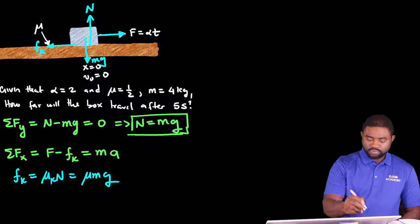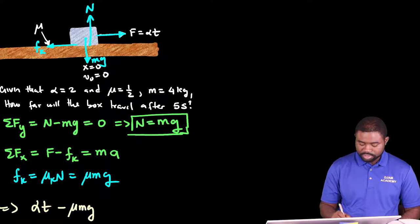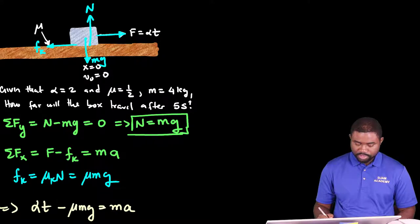Therefore, we can conclude that alpha T minus mu Mg is equal to M A. So, how do we proceed from here?